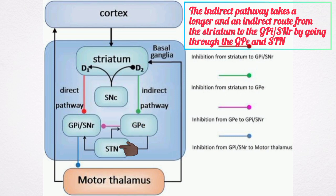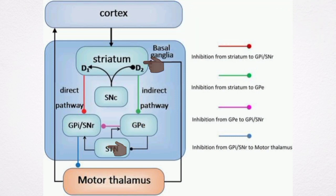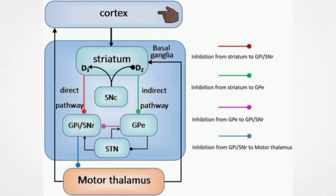In the indirect pathway, the striatum still receives excitatory inputs from the cortex. However, the striatum then sends inhibitory projections to the external globus pallidus.